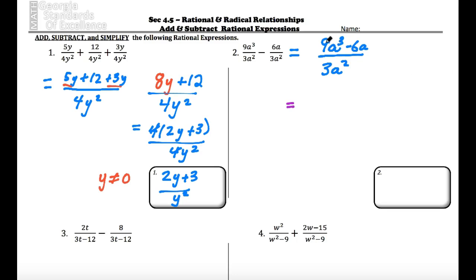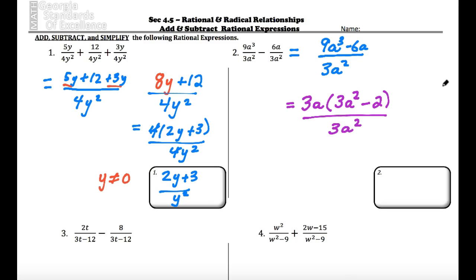What we can do is simplify. 3 goes into both 9 and 6, and they share an a, so we factor out 3a. 9a cubed divided by 3a is 3a squared, and 6a divided by 3a is 2, so it's minus 2, all divided by 3a squared. Then 3 cancels with 3, and the a cancels with one of the a's, leaving us with 3a squared minus 2, all divided by a. And again, a cannot be 0.